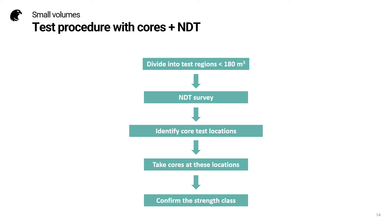For small volumes, we can make life easier by using NDT. Here we can see the workflow. First, we divide larger concrete volumes into test regions less than 180 cubic metres. Then we do an NDT survey, identify core test locations, take cores at these locations, and finally confirm the strength class.